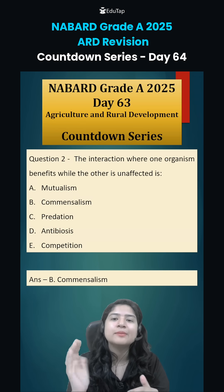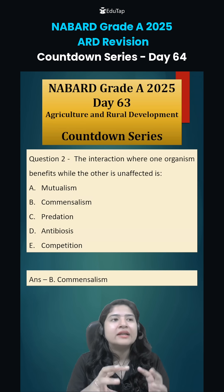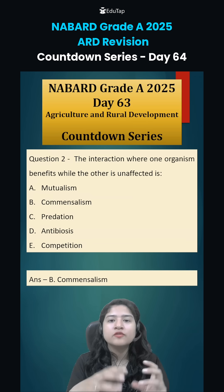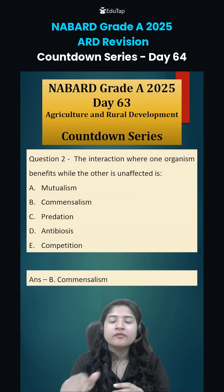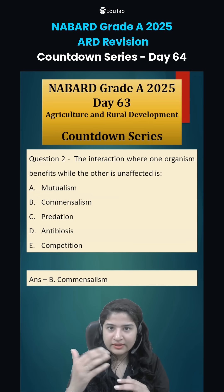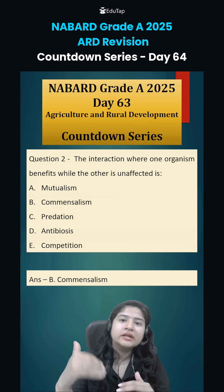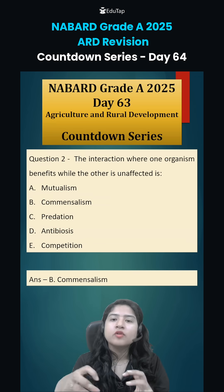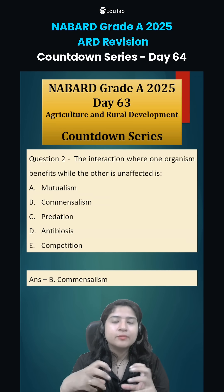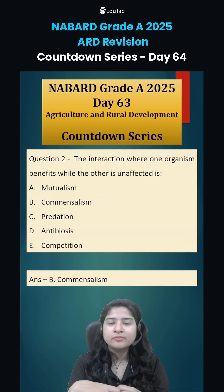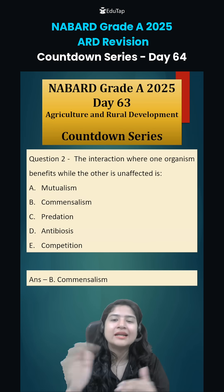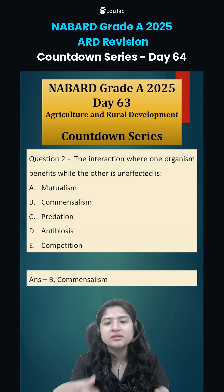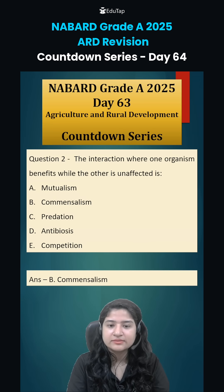For example, there is a plant — a leaf — and there is a frog. During rainfall, the frog will take shelter under the leaf. Here, the frog is getting benefited because it is protecting itself from rain. But the plant — that leaf — is unaffected. So this type of relationship is known as commensalism.